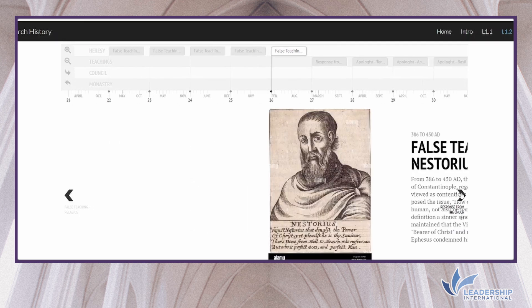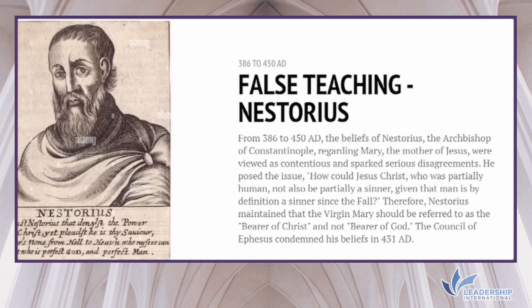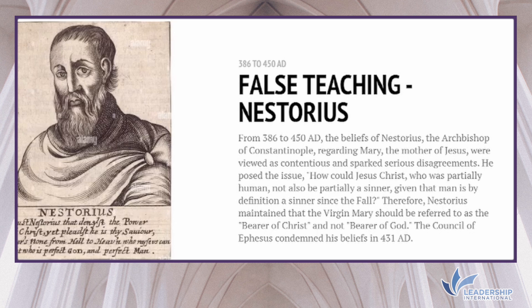From 350 AD, the beliefs of Nestorius, the Archbishop of Constantinople, regarding Mary the mother of Jesus, were viewed as contentious and sparked serious disagreement. He posed the issue: how could Jesus Christ, who was partially human, not be partially a sinner, given that man is by definition a sinner since the Fall? Therefore Nestorius maintained that the Virgin Mary should be referred to as the bearer of Christ, and not the bearer of God. The Council of Ephesus condemned these beliefs in 431 AD.